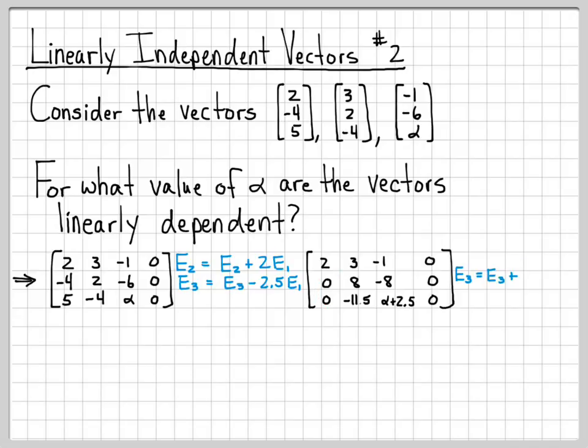For the next row operation, if we let E3 equal E3 plus 11.5 over 8 times E2, I'm basically multiplying this by 11.5 over 8 to cancel the eights and get an 11.5. So when I add it to this negative 11.5, I get a zero there.